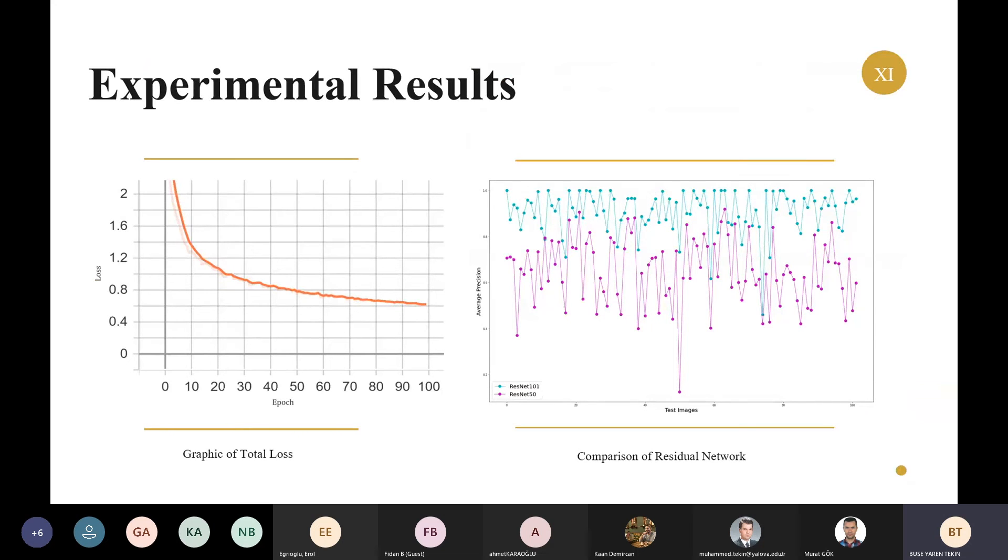In our experimental results, the graphic shown in the figure on the left belongs to the graphic of total loss values resulting from the trained data. By providing a total of 100 epoch training, the loss value was reduced below a certain value, and we reached the 0.6 loss value.